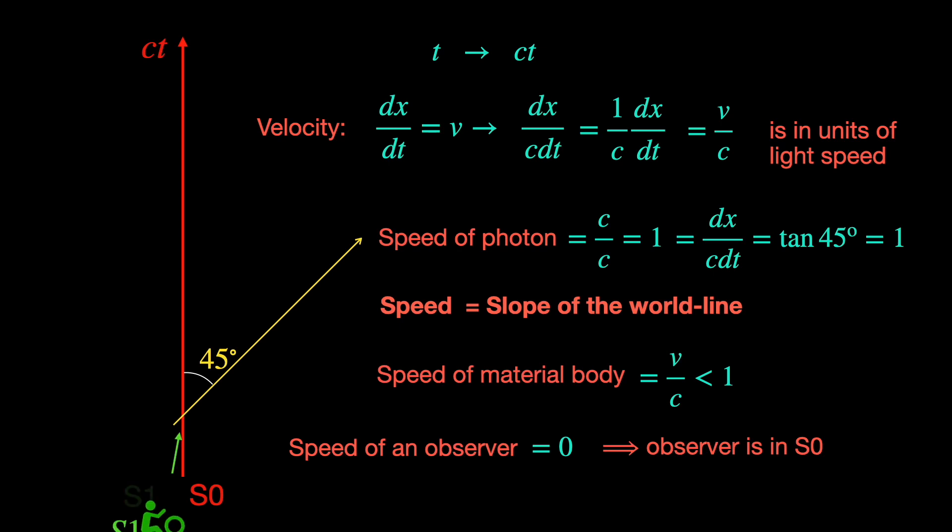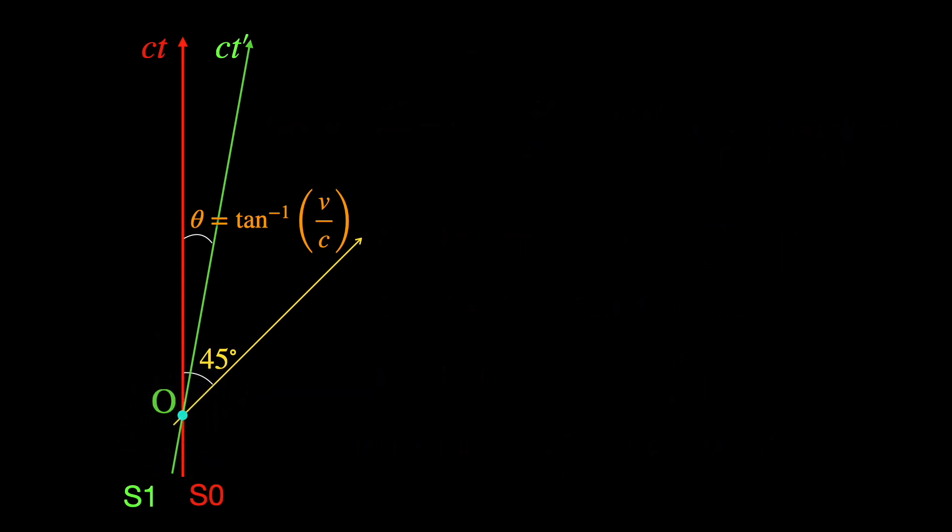In the same spirit, the time axis of the moving frame s1 is nothing but the world line of one of the s1 frame observers. If he has a uniform relative velocity v by c with respect to s0, then time axis of s1 makes an angle tan inverse v by c with the time axis of s0. The intersection of the time axis of the two frames is chosen to be the common origin of both the frames denoting it by event o. Passing through o in the horizontal direction is the space axis of our rest frame s0.